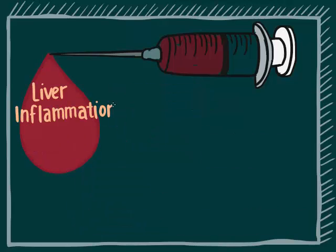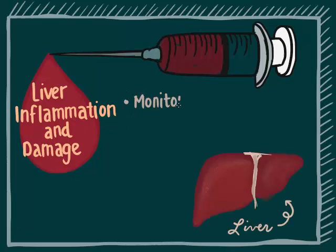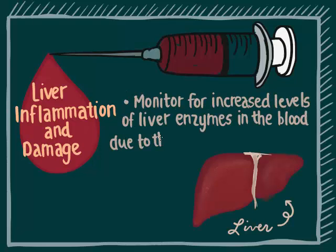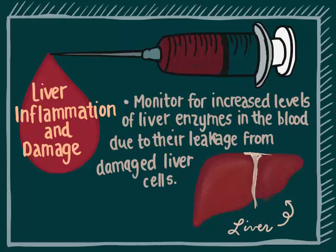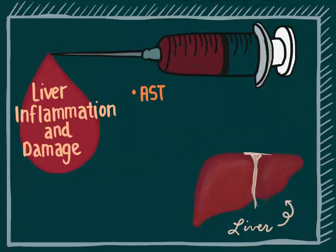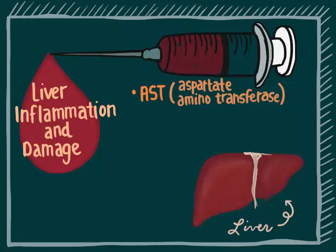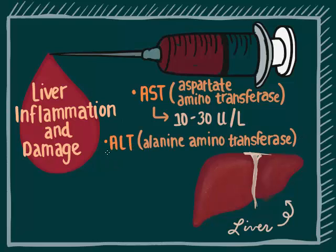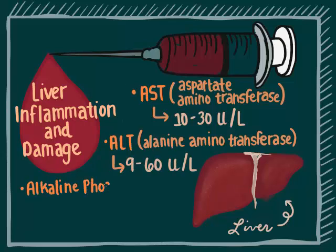Tests for liver inflammation or damage. Increased levels of liver enzymes in the blood may indicate that they are being leaked out from damaged liver cells. AST (aspartate aminotransferase) has a normal range of 10 to 35 units per liter. ALT (alanine aminotransferase) has a normal range of 9 to 60 units per liter. Alkaline phosphatase has a normal range of 40 to 115 units per liter.